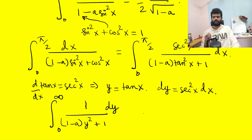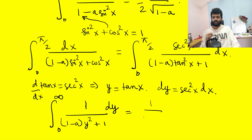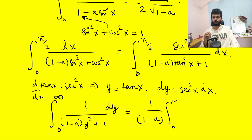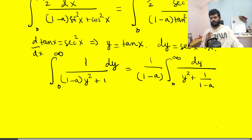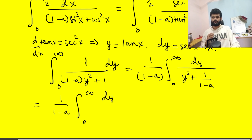We can pull out 1/(1 − a), so the integral becomes (1/(1−a)) times the integral from 0 to ∞ of dy divided by (y² + 1/(1−a)). This can be written as the integral from 0 to ∞ of dy divided by (y² + (1/√(1−a))²).